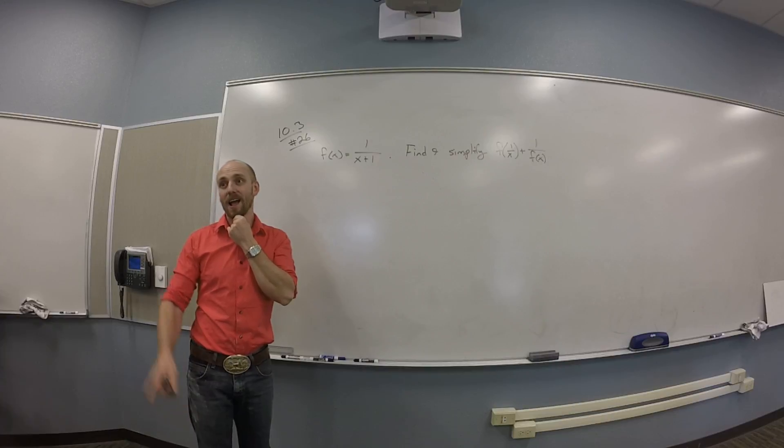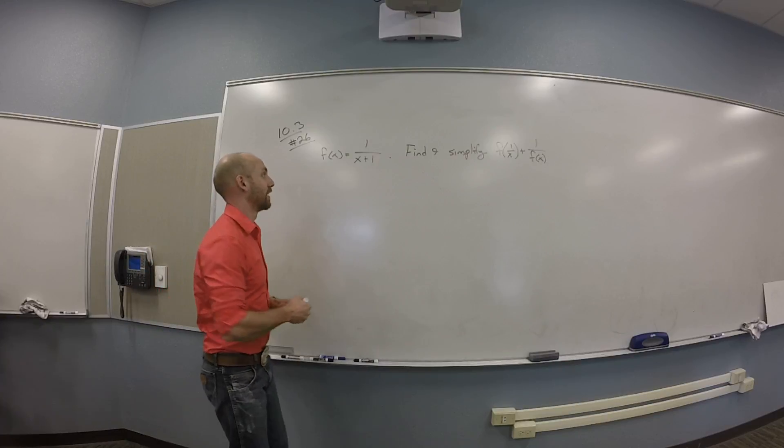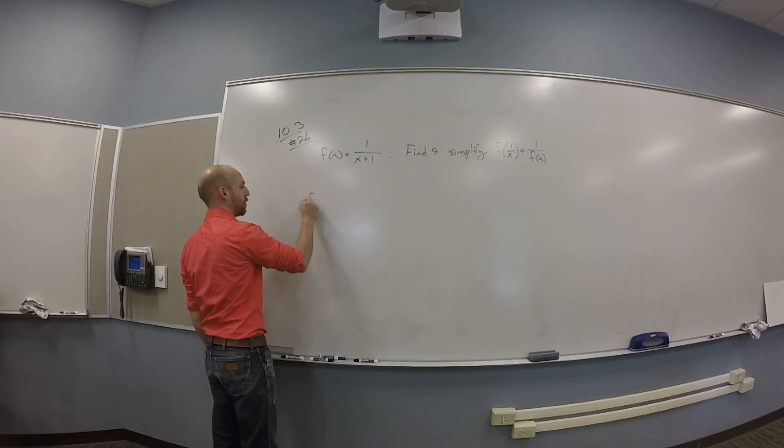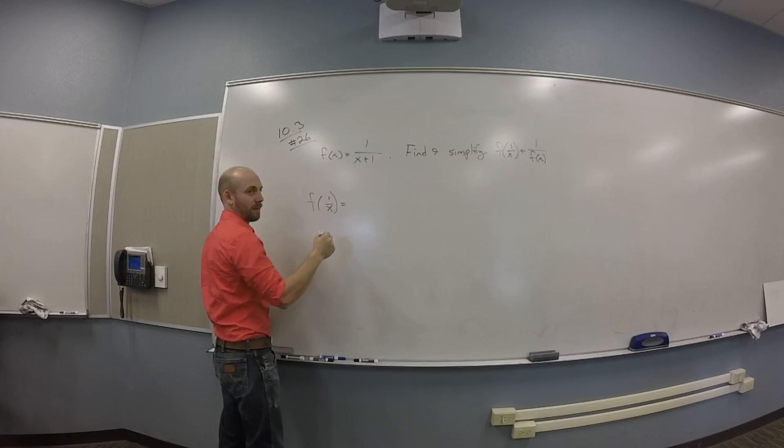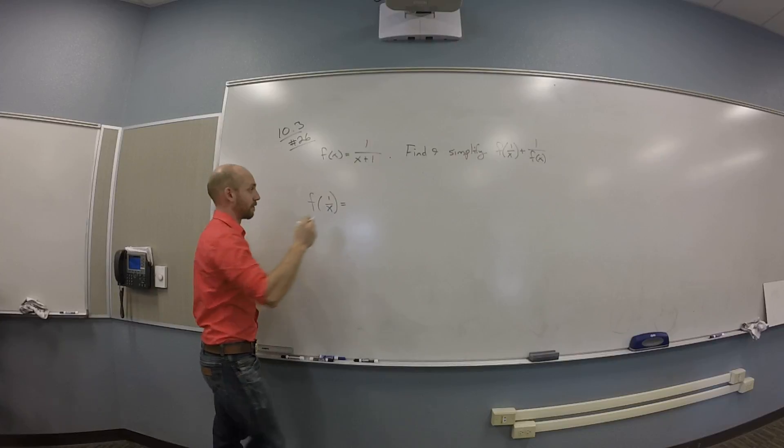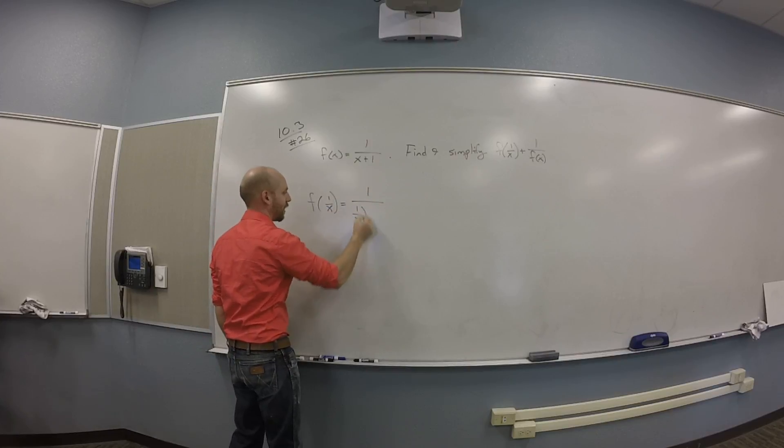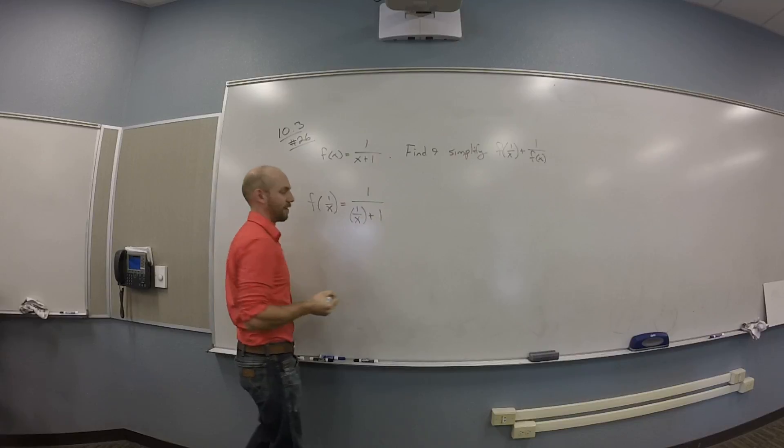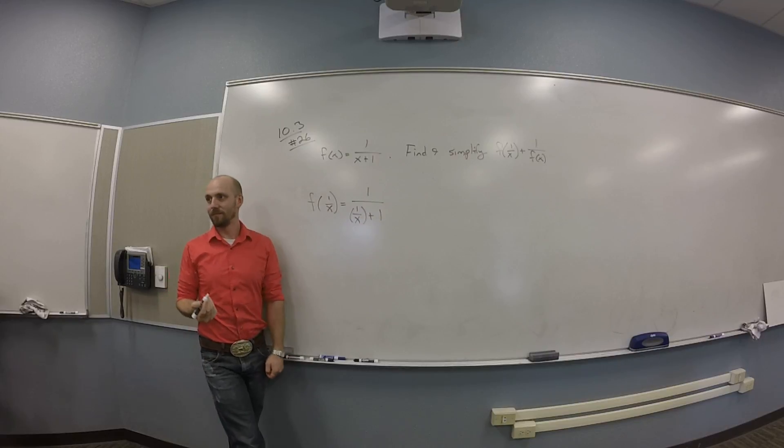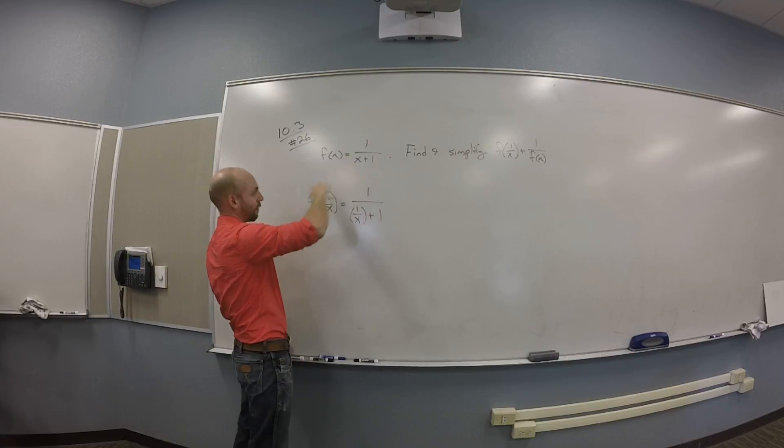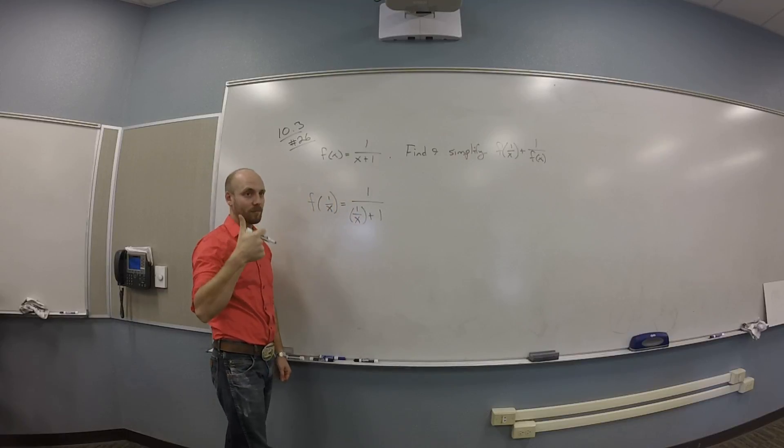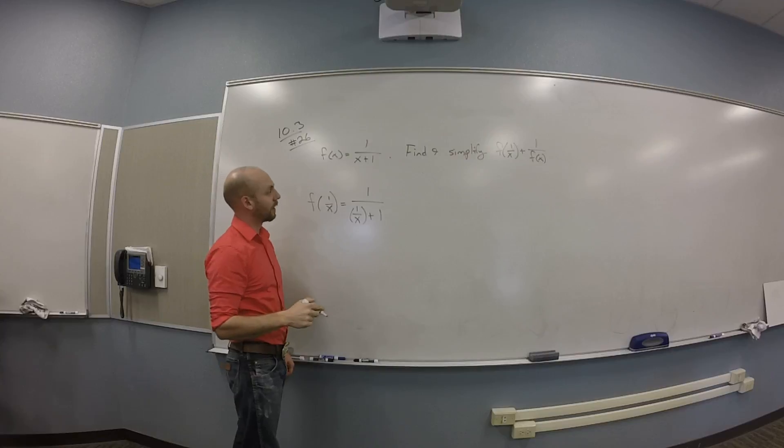You don't. Okay, so let's maybe try pieces. f of 1 over x should be what? 1 over 1 over x plus 1. Yeah. Right? You went and got the rule for f and then you put 1 over x in everywhere you saw an x. Cool.